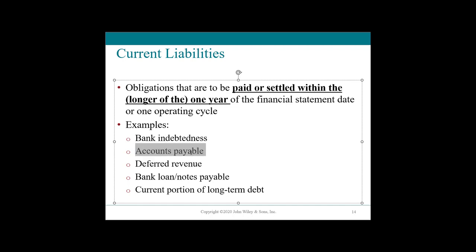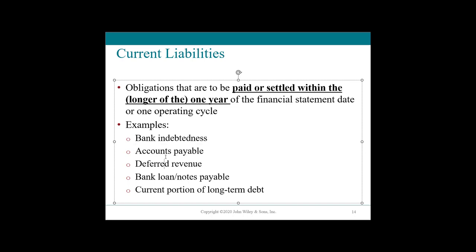Current liabilities could also be accounts payable. If you buy inventory on account, you owe them later — you got the inventory, gave them an IOU, and will settle in 30, 60, or 90 days. Fun fact: if you buy inventory from another business, your accounts payable is their accounts receivable. Then there's deferred revenue — when somebody pays you and you haven't yet performed the services.